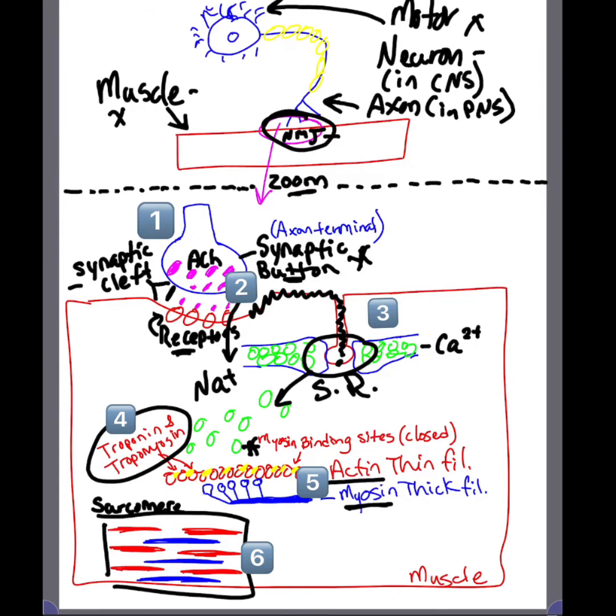But thanks to calcium, calcium allows the movement or shift of troponin and tropomyosin, allowing the exposure of myosin binding sites. And once the active site exposure, we're going to have a cross bridge formation between myosin and actin thin filaments, creating eventually a contraction in the sarcomere.